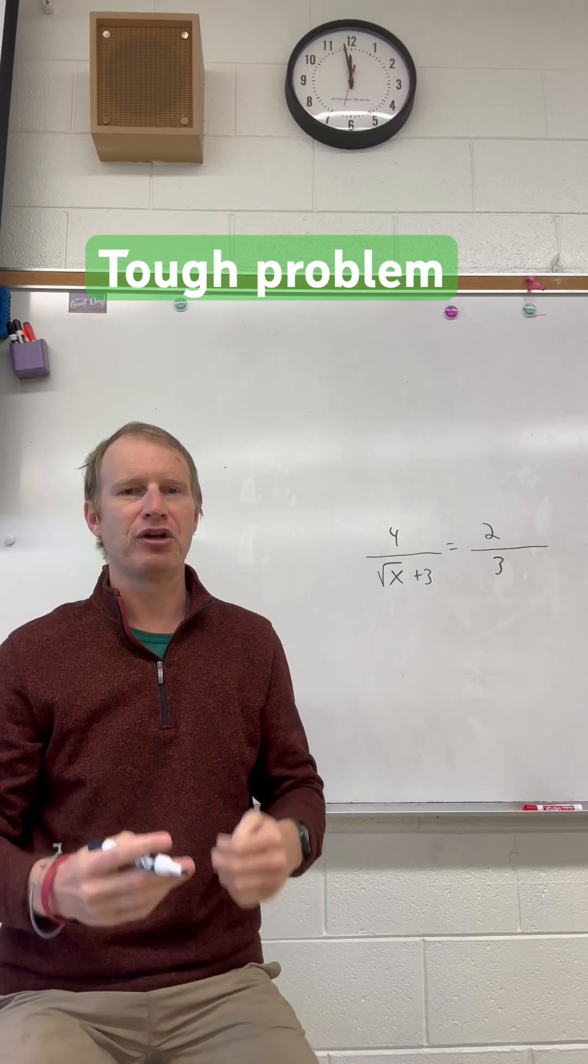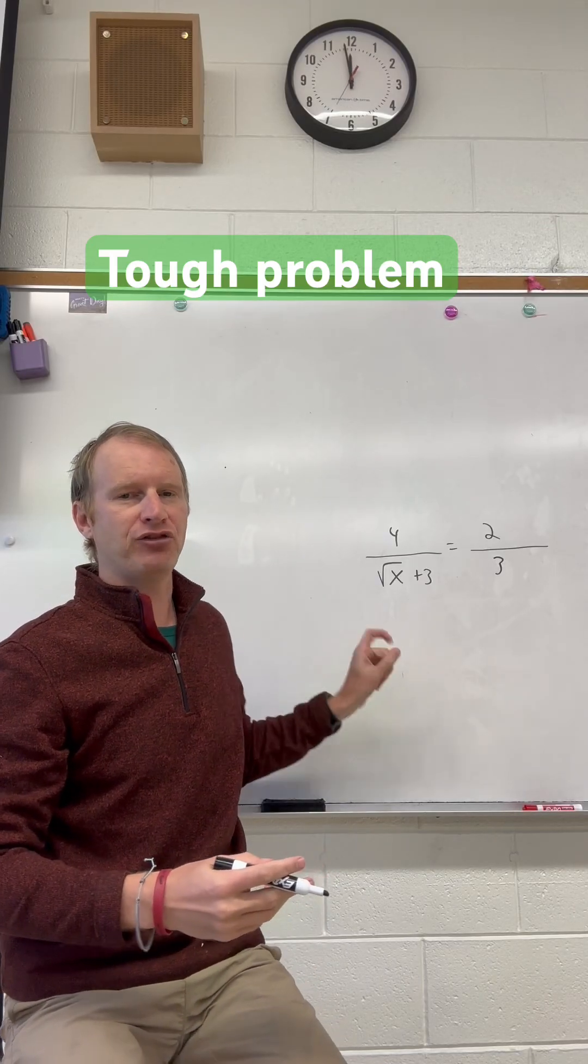Looks like a tough problem behind me here. Let's see if we can do it. We've got a square root on the bottom of a fraction. What do we do?